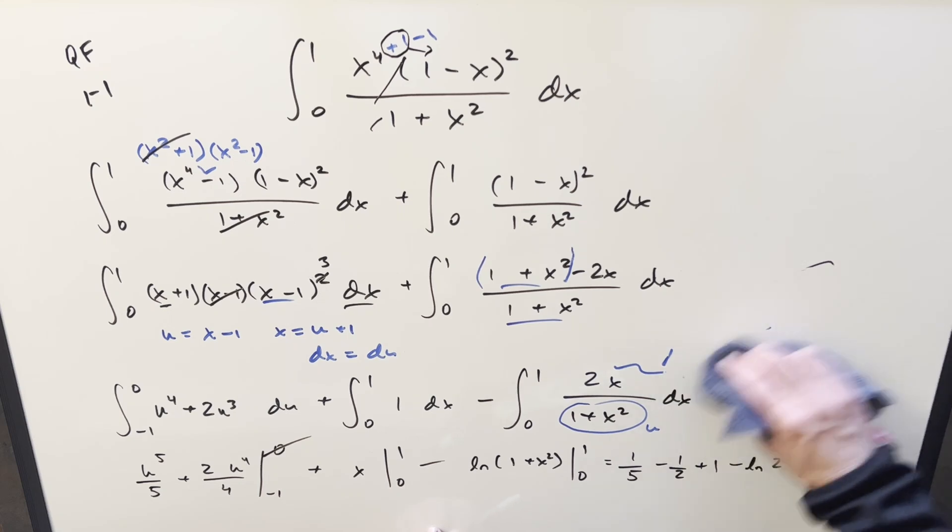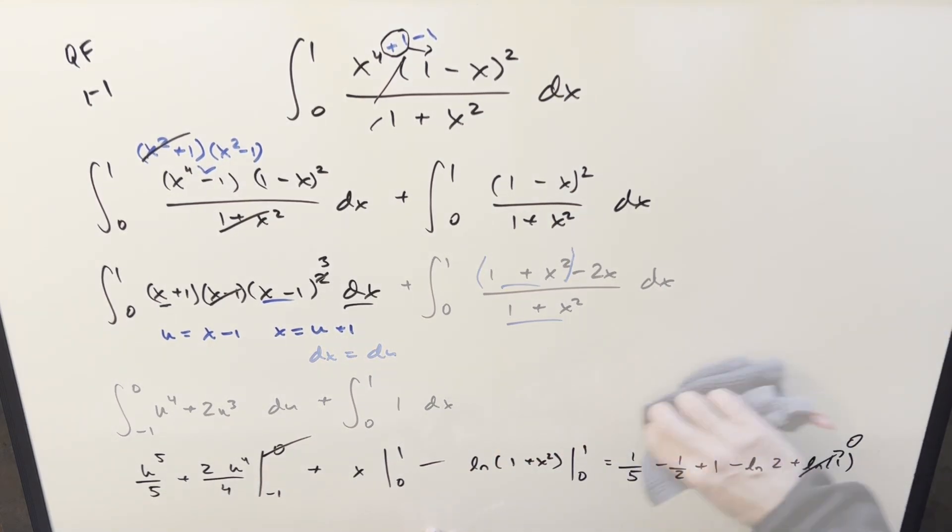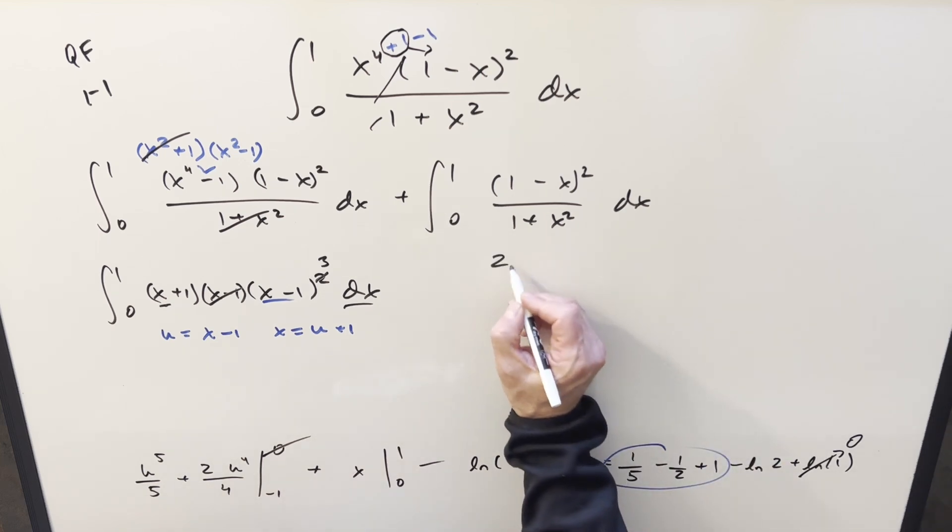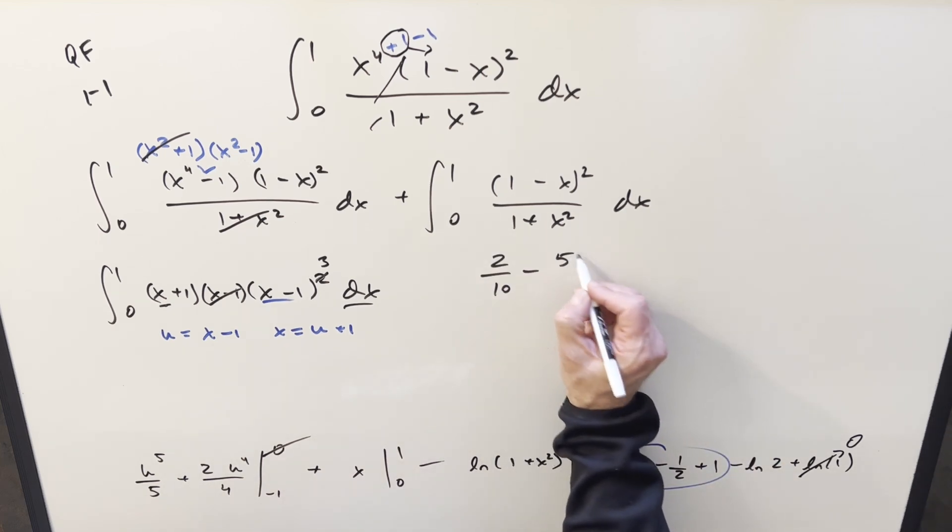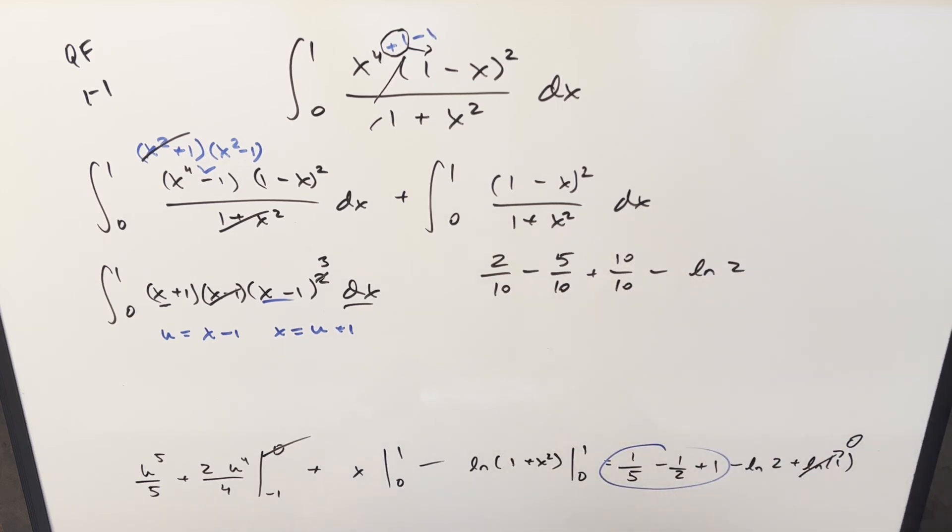I'll just make a little space so we can add all this stuff up and see what our solution is going to be. On all this stuff let me just get a common denominator put it together so we're going to have one fifth I'll write as two over ten minus five over ten one we can write as ten over ten minus natural log of two. Two minus five plus ten is seven so for my final solution of this we just get seven tenths minus natural log of two and that's it.